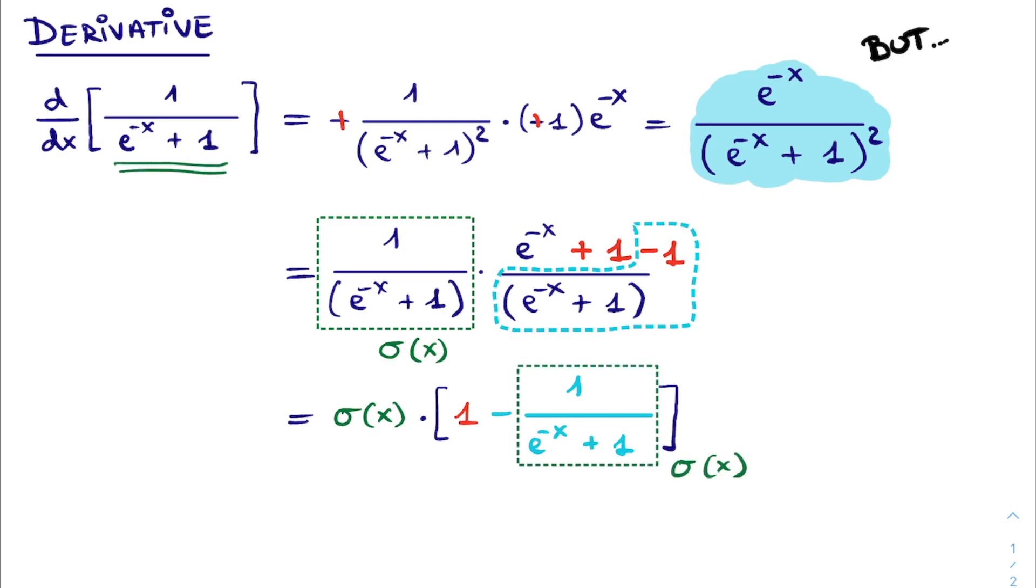Again, we can identify this sigmoid function here. Thus, we ultimately get that the derivative of the sigmoid function is equal to itself multiplied by 1 minus itself.